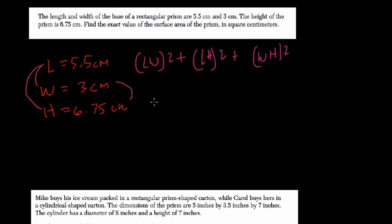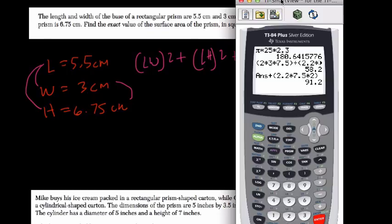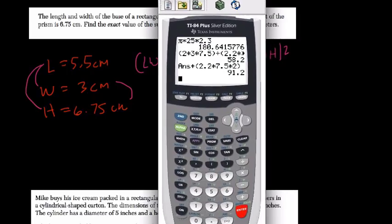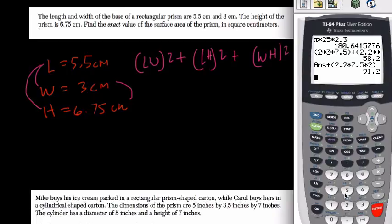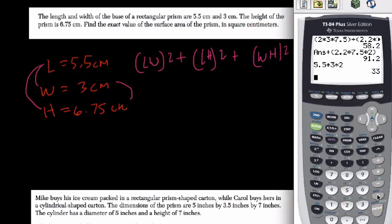Now we just plug these numbers in. Let's take the calculator out here. So length by width, that's 5.5 times 3 times 2, 33, plus,